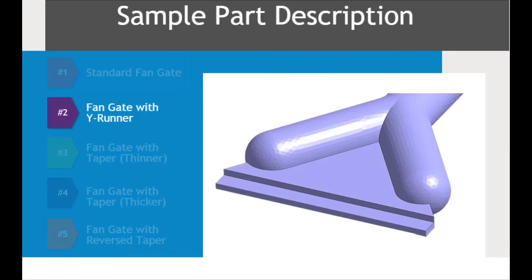The second example is the standard fan gate with an added runner segment that will feed material to the outer edges of the fan gate. For our purposes, we will refer to this example as the fan gate with the Y runner.